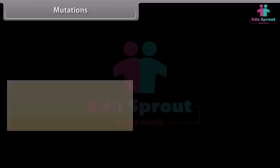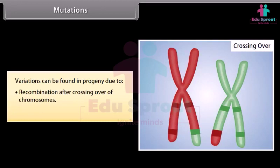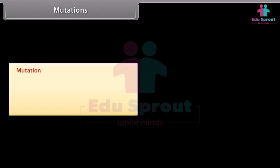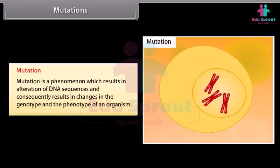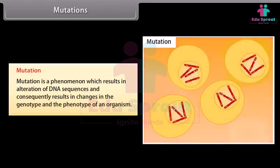Variations can be found in progeny due to: 1. Recombinations after crossing over of chromosomes, and 2. Mutations. Mutation is a phenomenon which results in alteration of DNA sequences and consequently results in changes in the genotype and the phenotype of an organism.